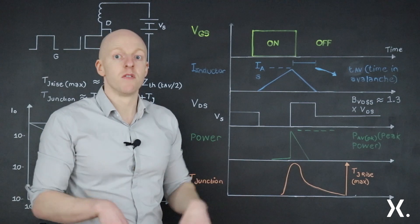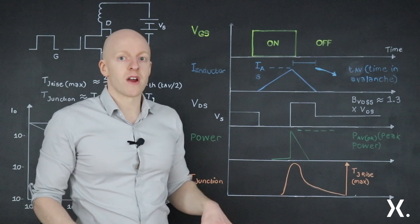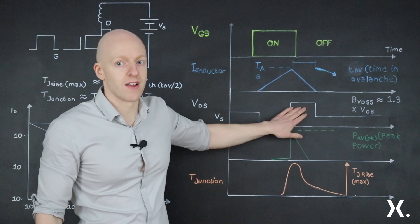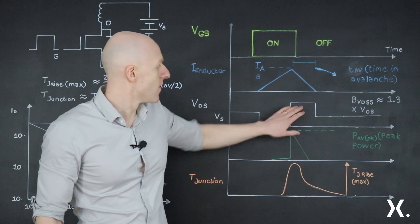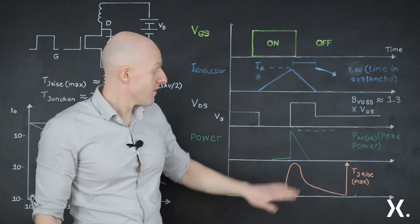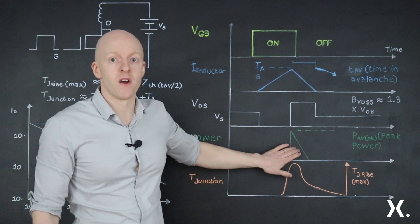And this energy goes into the MOSFET. So if we have a look at the current and the voltage, we can see that during the avalanche, we have both high current and high voltage. Therefore, we have a lot of power going into the MOSFET during this time.